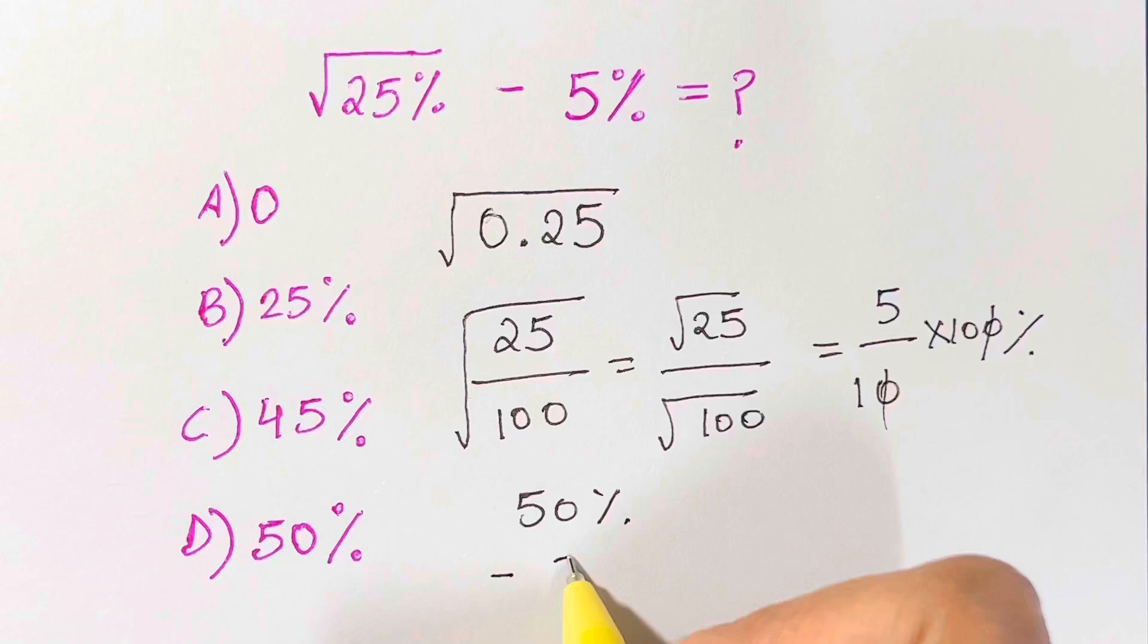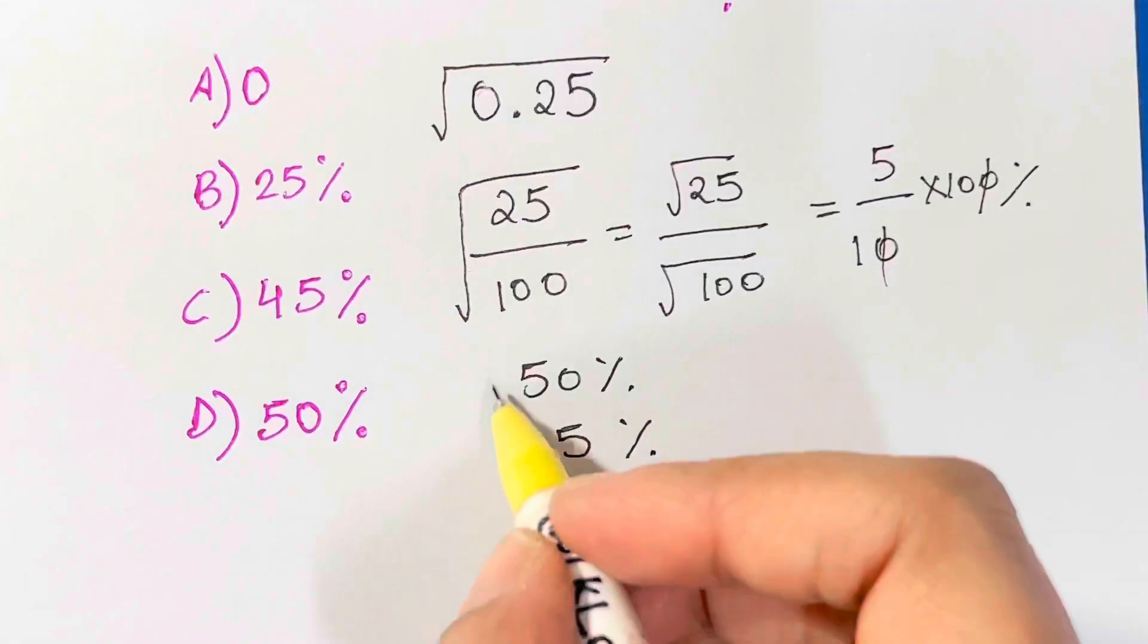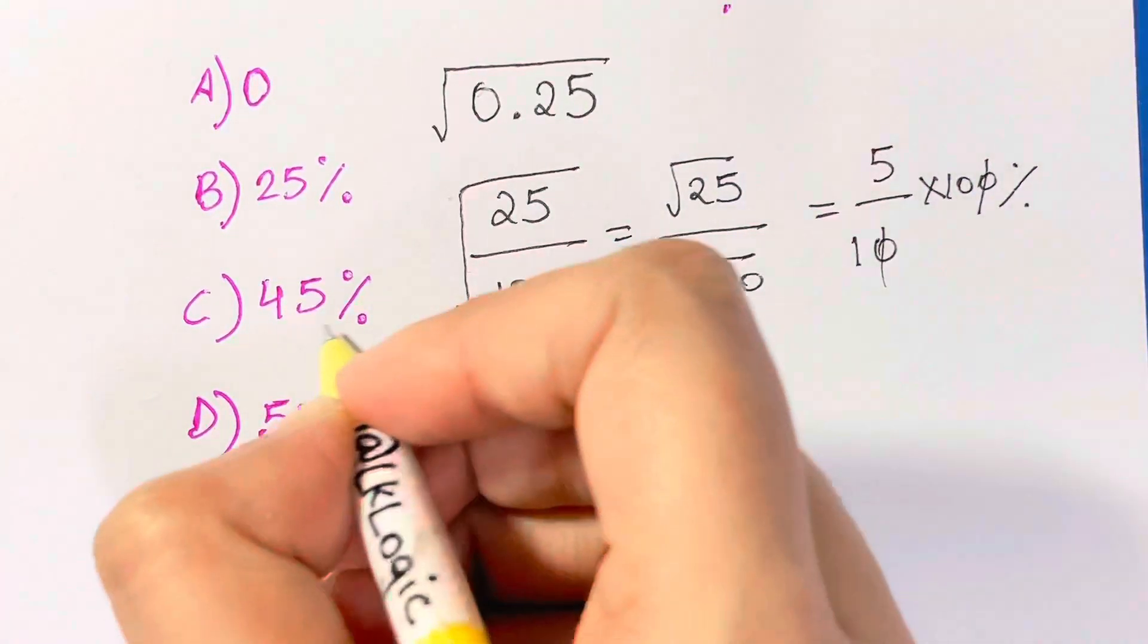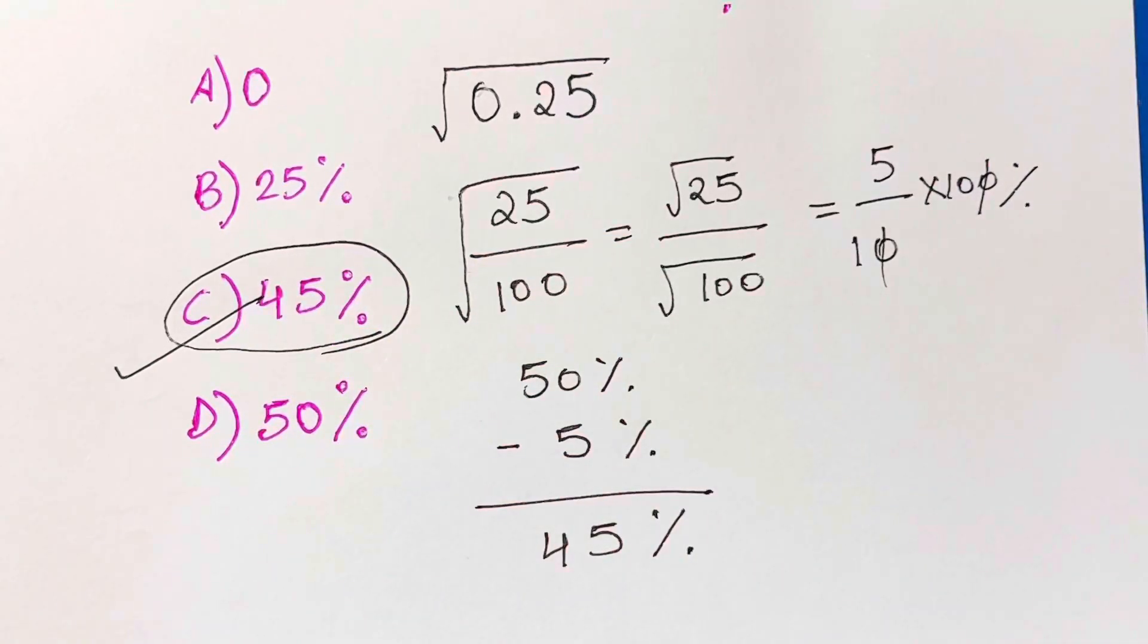So what do we get? 50 minus 5 is 45%, and that's your answer, choice C. Thank you so much, bye bye, take care, have fun!